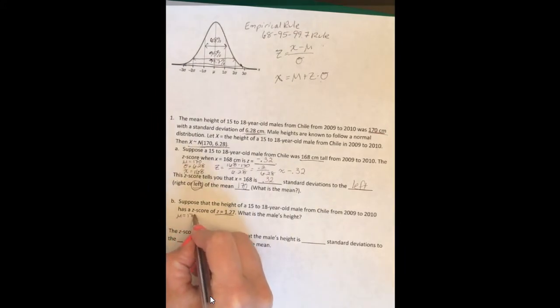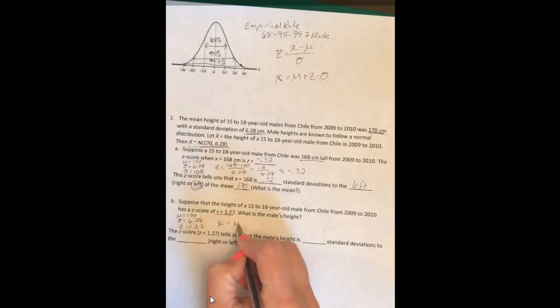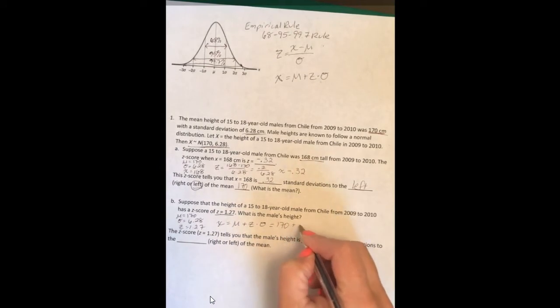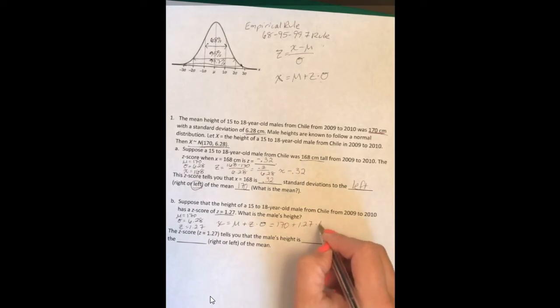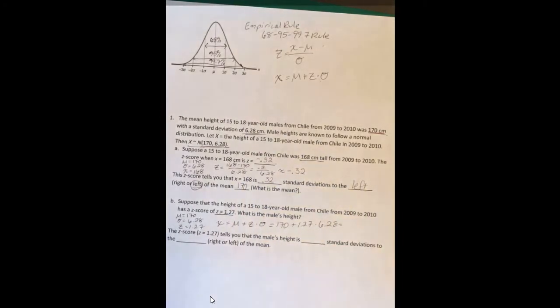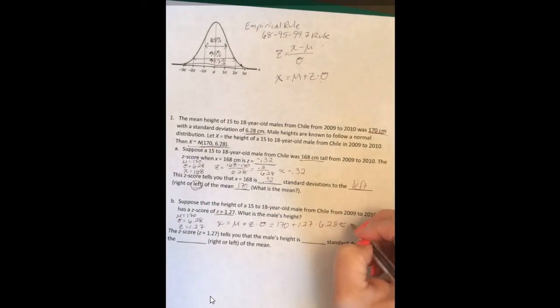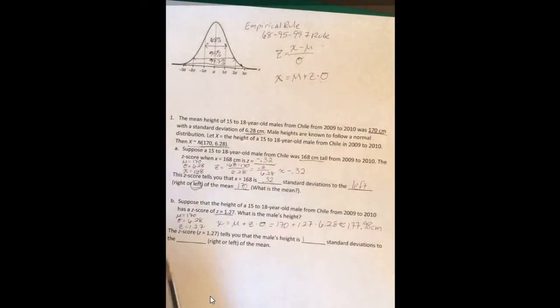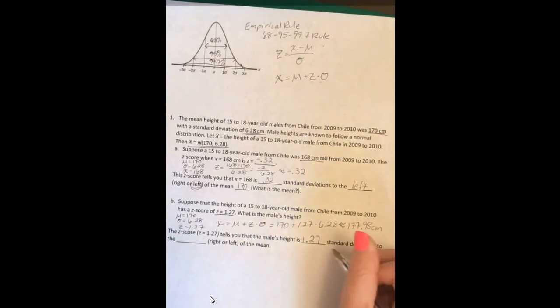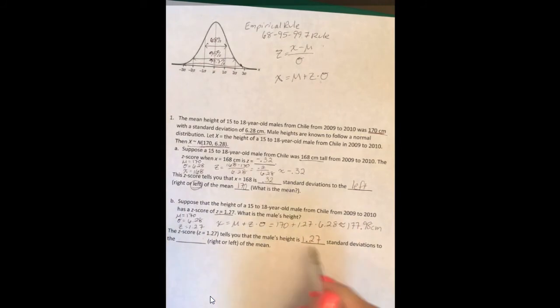So we know the standard deviation is 6.28, we know a z-score of 1.27. So x equals the mean plus z times the standard deviation: 170 plus 1.27 times 6.28. Again, I've already done this calculation. So we get that the male's height is 177.98 centimeters. So the z-score tells you that the male's height is 1.27 standard deviations to the right of the mean.